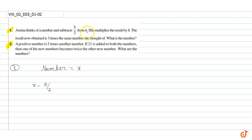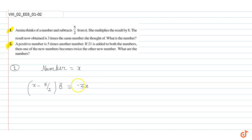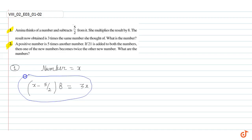She multiplies the result by 8, so now we have x minus 5 by 2 multiplied by 8. The result is 3 times the same number she thought of, so x minus 5 by 2, into 8, is equal to 3x.